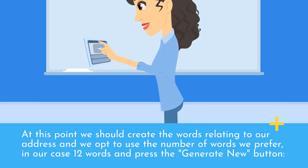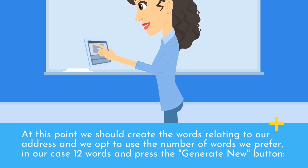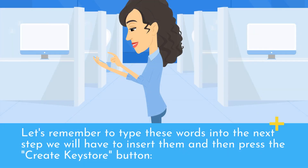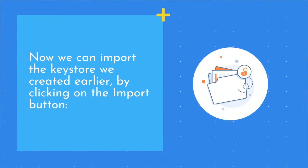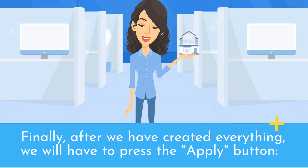At this point we should create the seed words relating to our address. We can choose the number of words we prefer — in our case 12 words — and press the Generate New button. Remember to note down these words, as we will have to insert them in the next step, and then press the Create Keystore button. Now we can import the keystore we created by clicking on the Import button. Finally, after everything has been created, we press the Apply button.